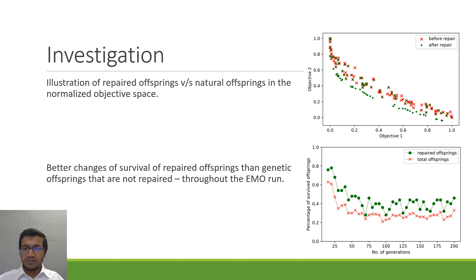Similarly we can see this EMO run where we have the percentage of the repaired offsprings that survived versus percentage of the total offsprings that survived, which is consistently more throughout, which actually is a proof that the repaired offsprings were better in nature and have better survivability to reach the next generation.